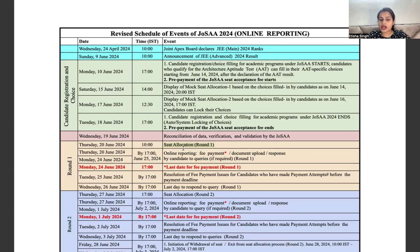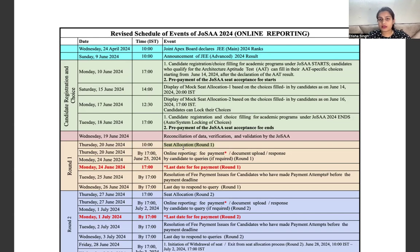This is the first counseling round that has started, in which you have filled preferences according to campus. In this campus preference, we have three options in the portal: the first option is upgrade, the second is freeze, and the third is float.